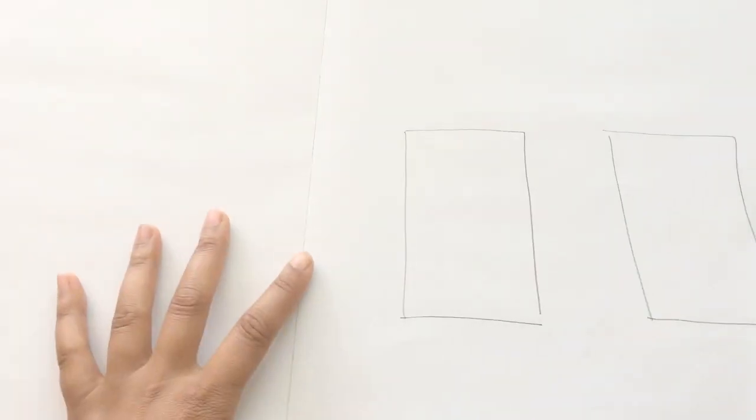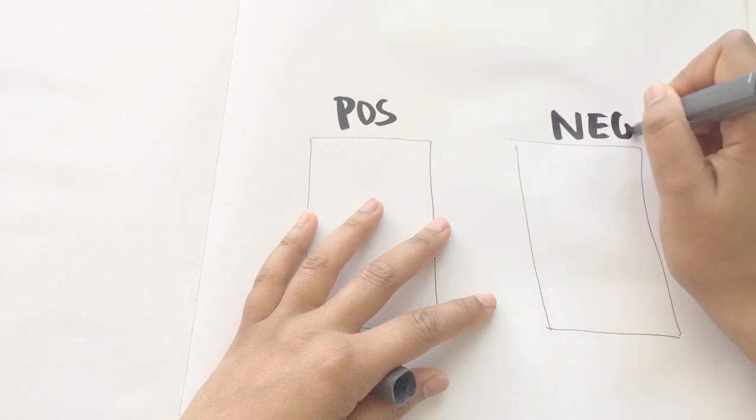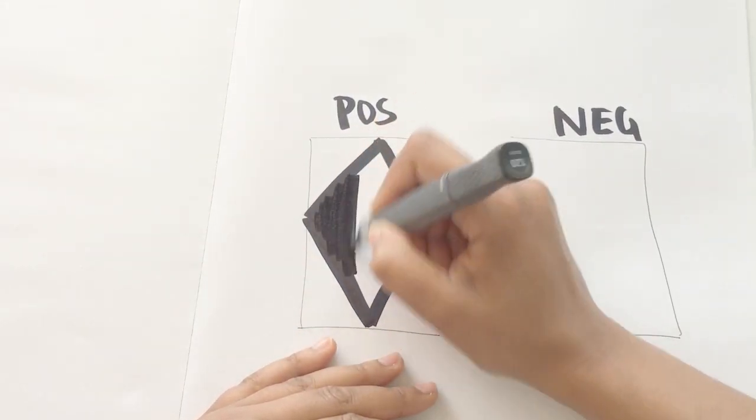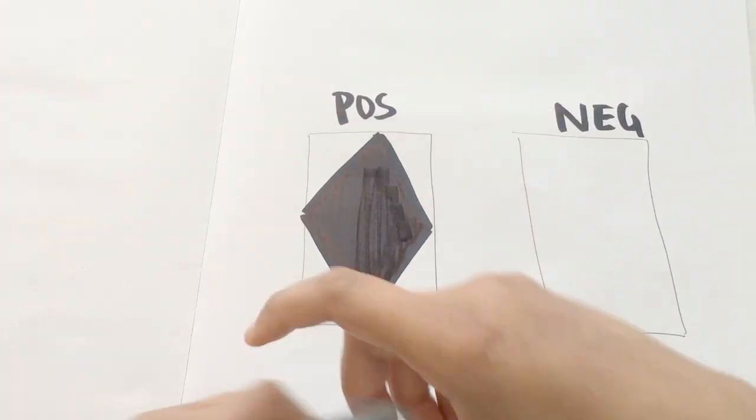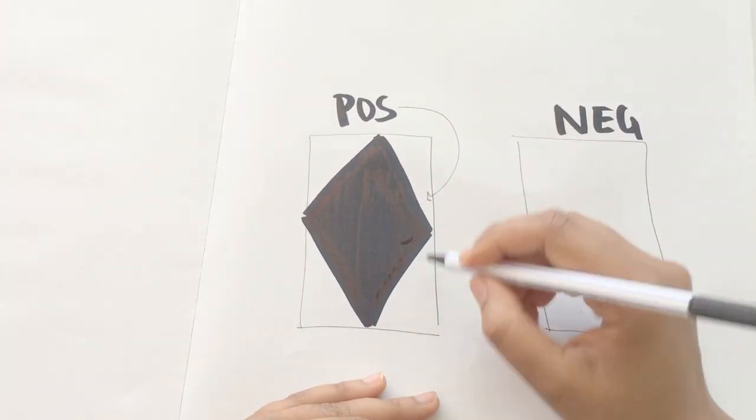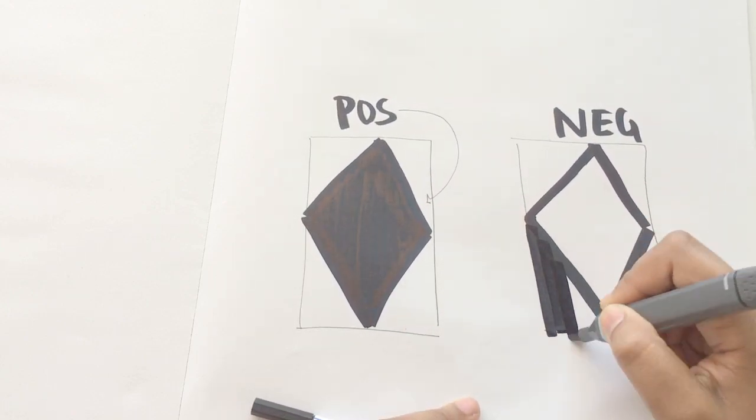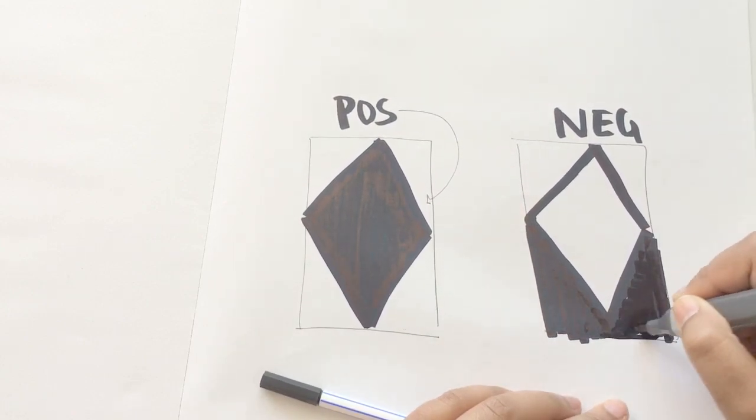There are two types of spaces, positive space and negative space. Positive space is the space that you fill and negative space is the space that's not filled by any color or shapes. It's your goal when building composition to create a harmonious balance between both positive and negative space.